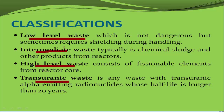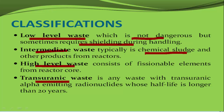Low level waste is not highly dangerous, but does require shielding. Intermediate waste is typically chemical sludge. High level waste has a large amount of radiation. Transuranic waste is man-made, with a half-life of around 20 years.